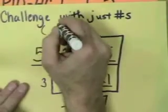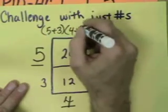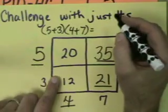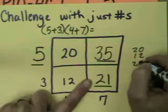So I could then say this, if I really wanted to write it this way. 5 plus 3 times 4 plus 7 should equal all of these things added. And so what are they? Let's see, 20, 12, 21, and 35.